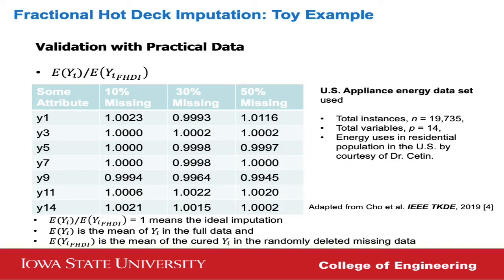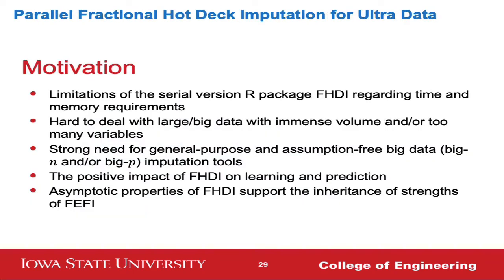Another example validates performance: for a 14-variable, approximately 19,000-instance appliance energy dataset from Dr. Satin, a ratio of 1 indicates good imputation. We confirmed the performance is very robust.